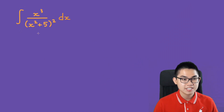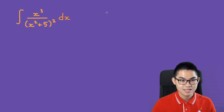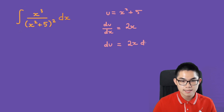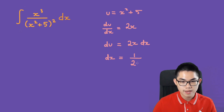We want to find the integral of x to the power of 3 over x squared plus 5, all to the power of 2, dx. Let u equal x squared plus 5. Then du over dx equals 2x, so du equals 2x dx, and dx equals 1 over 2x du.